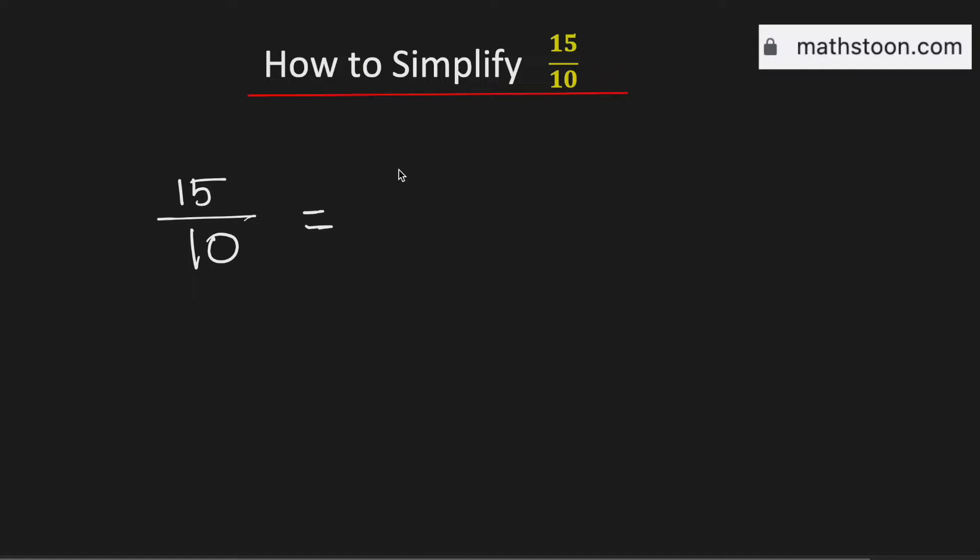See that we can write 15 as 3 times 5 and 10 as 2 times 5. So we can cancel the common number 5, therefore it will be equal to 3 over 2.